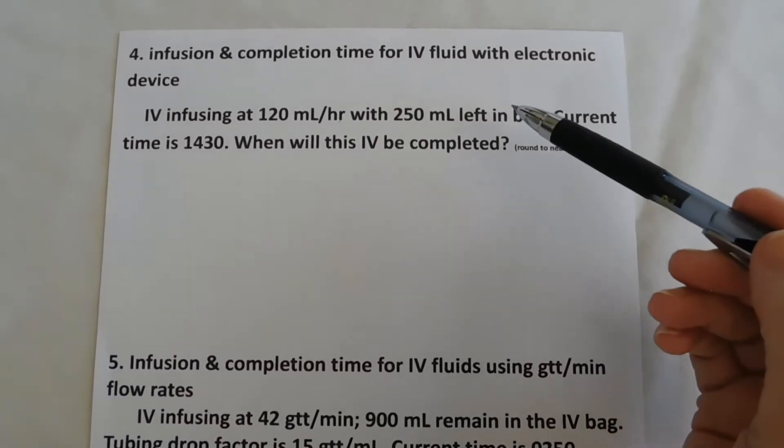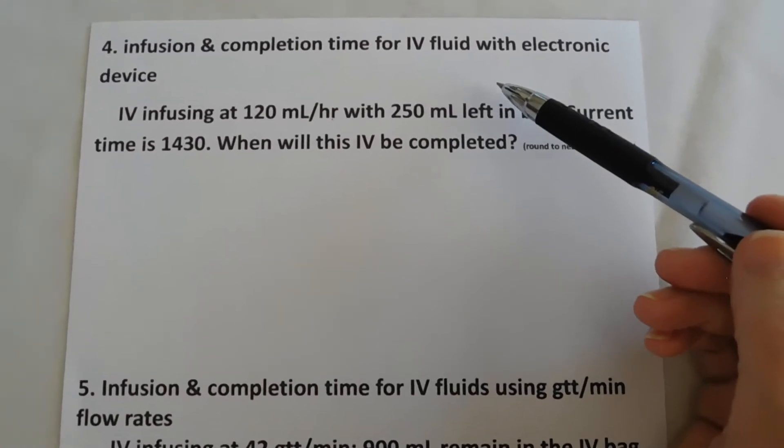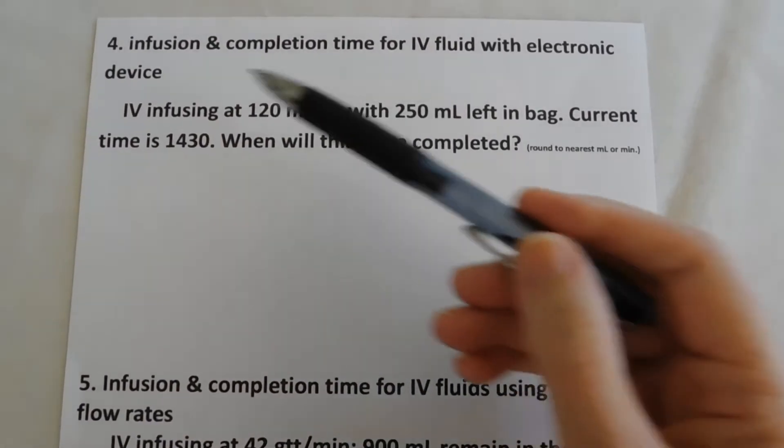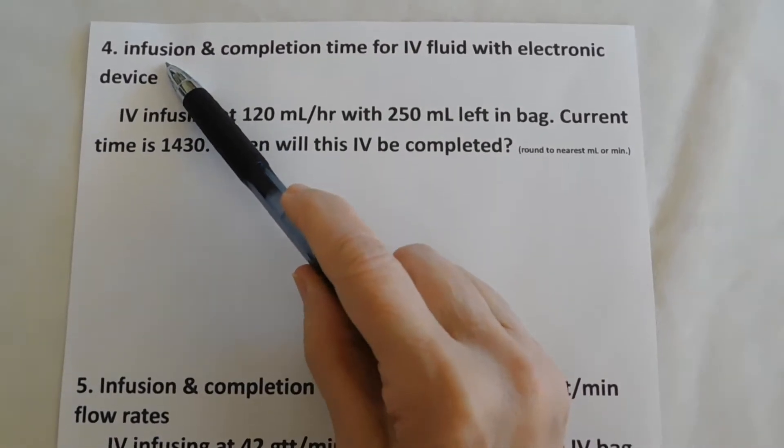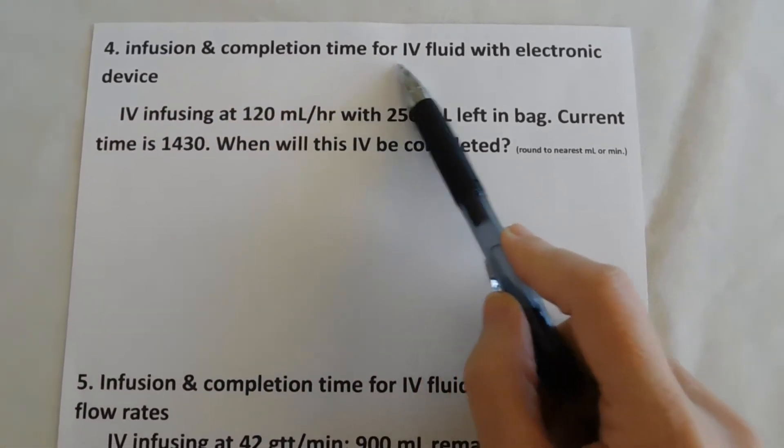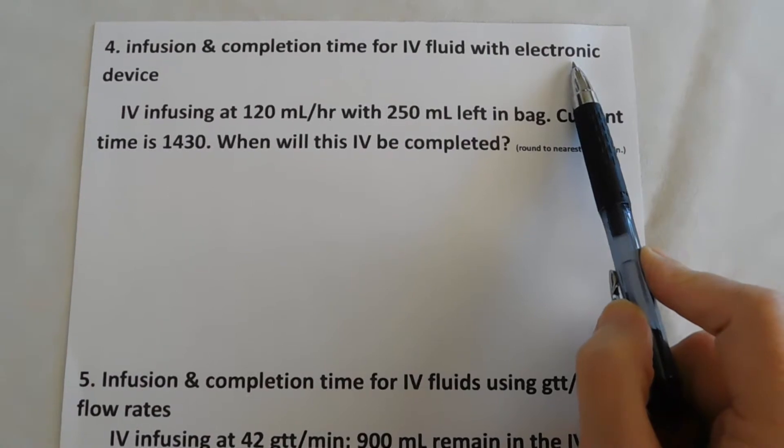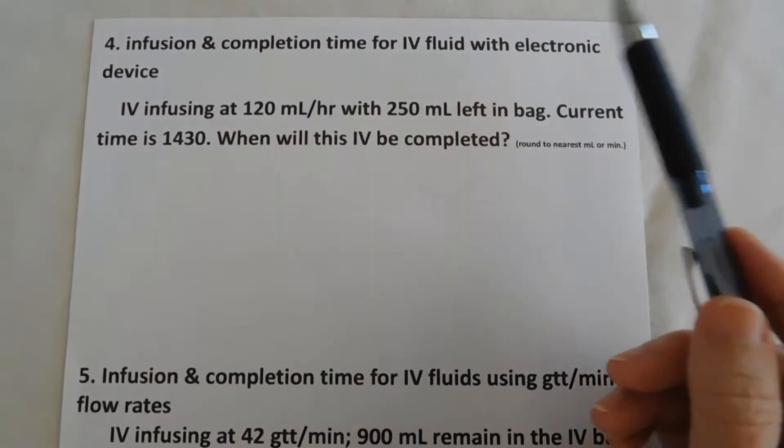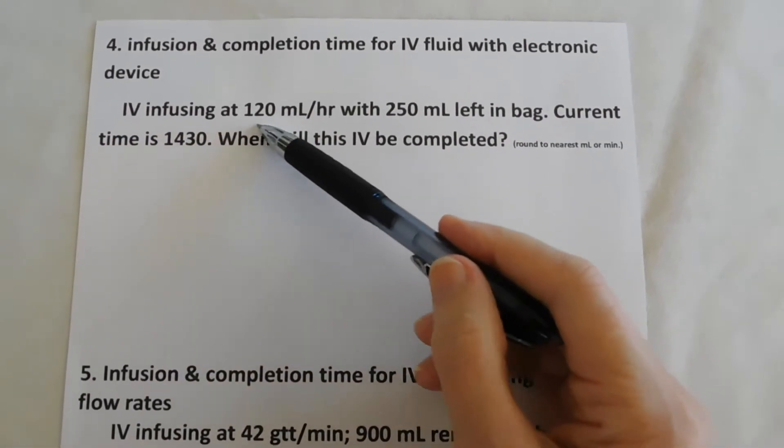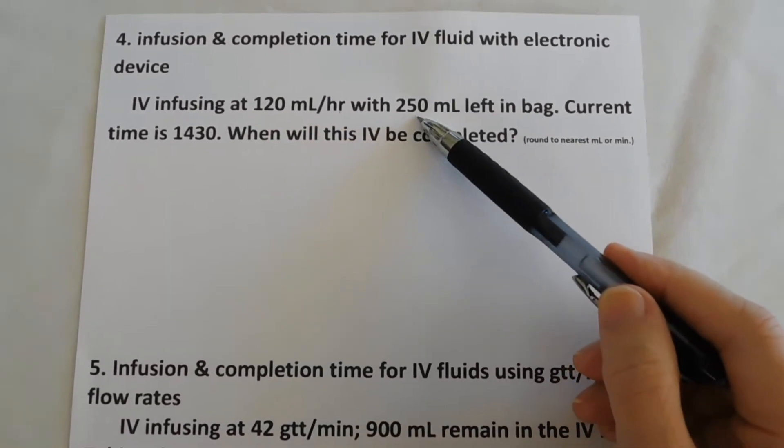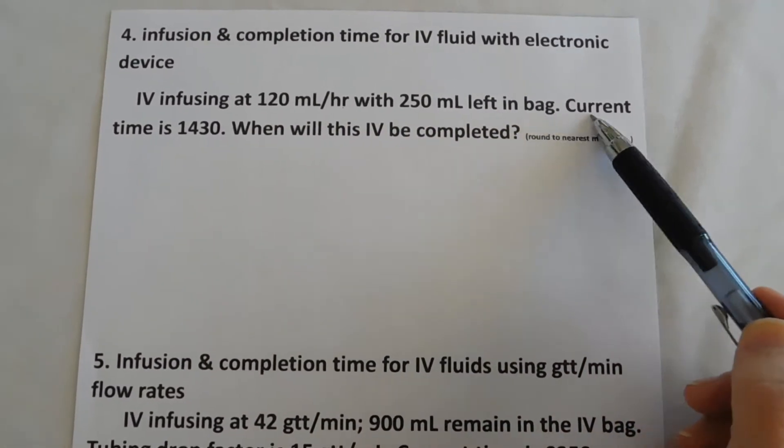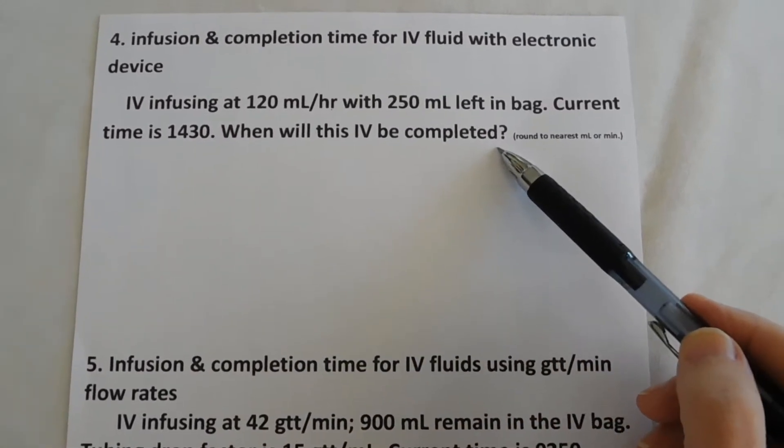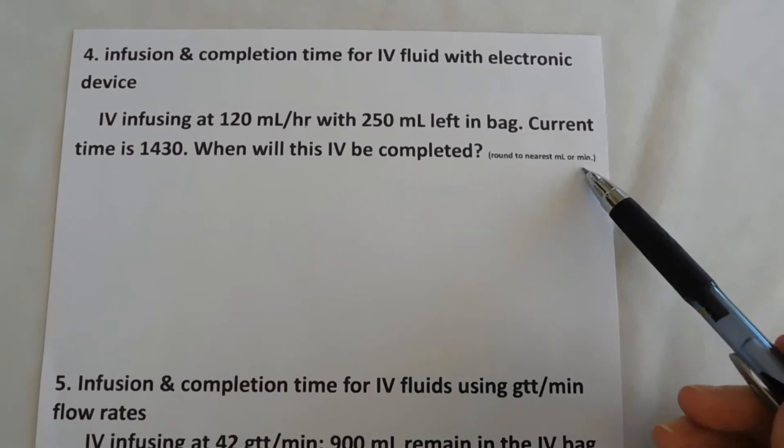We're going to be doing some IV calculations using dimensional analysis. There are two problems on this sheet, and there's multiple sections to each problem. The first one is what is our infusion and completion times for an IV fluid with an electronic device. And so that means we're going to be looking at mils per hour when we're talking about an electronic device. IV infusing at 120 mils per hour with 250 mils left in the bag. Our current time is 1430 using military time. And when will this IV be completed? We're going to round to the nearest milliliter or minute.